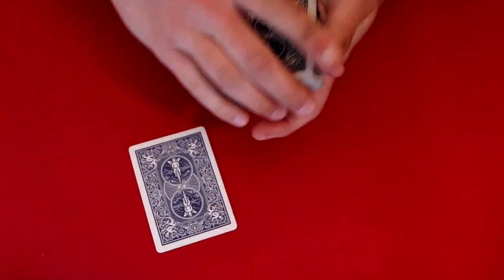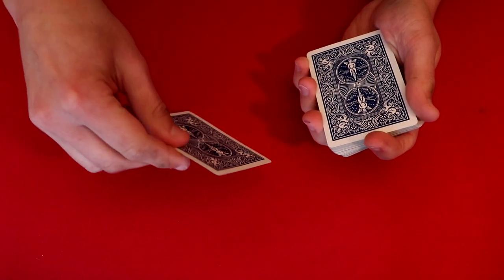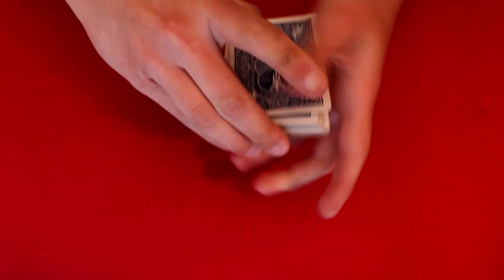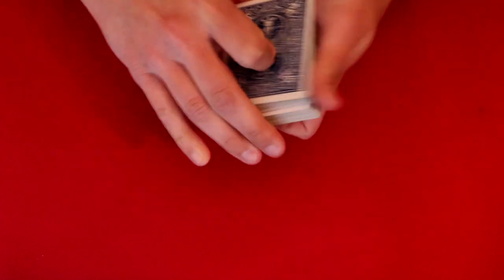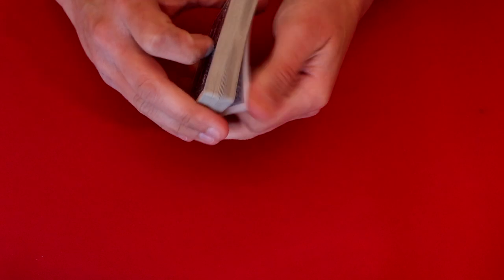You can start off by having a shuffle deck and a spectator is going to pick whatever card they want. Let's say, for instance, this is the card the spectator picks. I'm not going to look at it. That is your card for the trick. You say, look, I'm going to put it into the middle of the deck somewhere. We're going to get it lost.